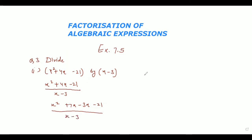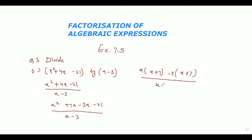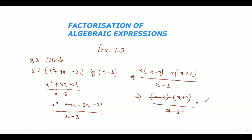Here we would take the factors. Taking x as common gives x plus 7, and taking minus 3 as common also gives x plus 7. So our factors come out as x minus 3 times x plus 7, divided by x minus 3. This x minus 3 will get cancelled with the denominator x minus 3, and we are left with x plus 7, which is our answer.